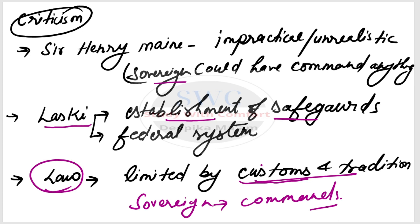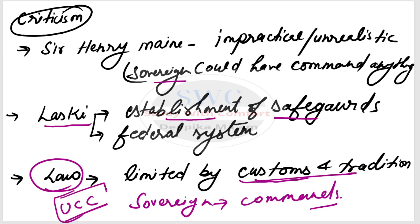For example, India's Uniform Civil Code has not yet been implemented because India has diversity — multiple religions and ethnicities — each with their own local customs and traditions. Can you tell me in which article of the Directive Principles of State Policy (DPSP) in the Indian Constitution the Uniform Civil Code is mentioned? Please comment the article number. Critics say that law is also dependent on customs and traditions, so the sovereign's commands cannot be unquestionable — people will question them if customs and traditions are violated.